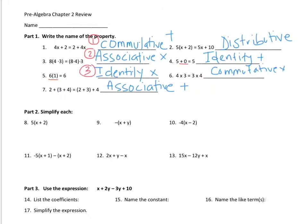The fourth one is the distributive property, which is a combination of multiplying and adding. Make sure that not only do you know if it's adding or multiplying, but that you know whether it's commutative, associative, identity, or distributive. For distributive, you don't write adding — you don't need to write plus or times for it.